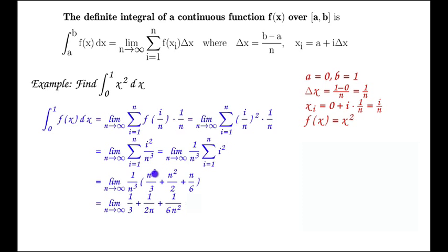Distributing through the 1 over n cubed, n cubed over n cubed cancels out. We get 1 over 3. n squared over n cubed gives us a 1 over n. n over n cubed cancels out to get 1 over 6 n squared.